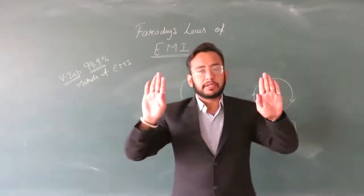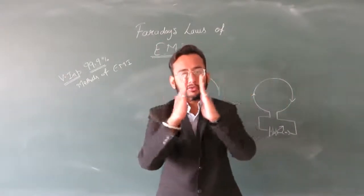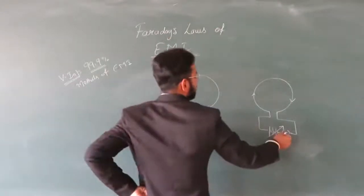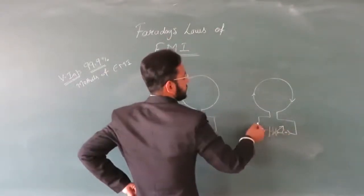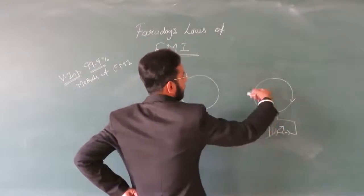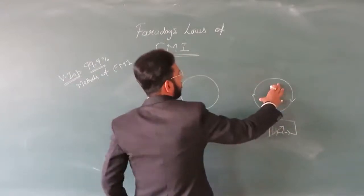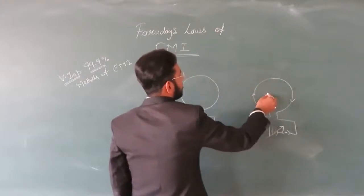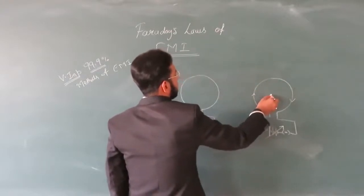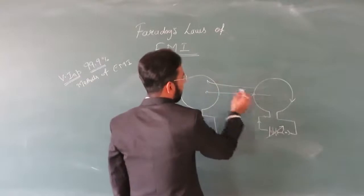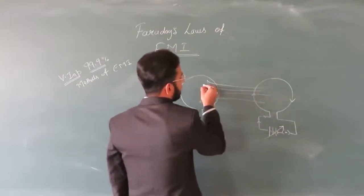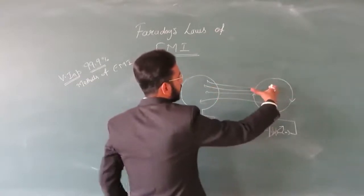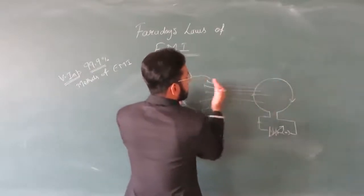If you look at the diagram, when the switch is turned on, current will flow and there will be a magnetic field. It will create a south pole or north pole — it will be a north pole. The magnetic field lines will be linked to the second coil. The magnetic field lines will touch the coil and it will be a north pole.